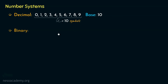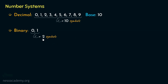Coming to the next number system, it is binary. In binary, we have got the symbols 0 and 1 — notice, two symbols. So, based on the number of symbols, the base of a particular number system is determined. Therefore, since we have got two symbols in binary, the base is 2.